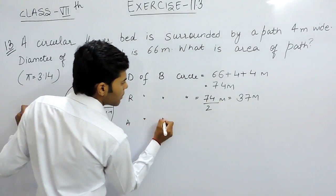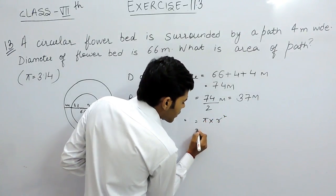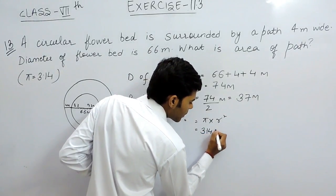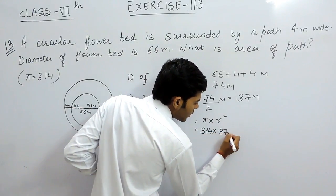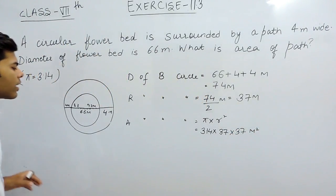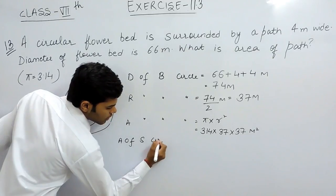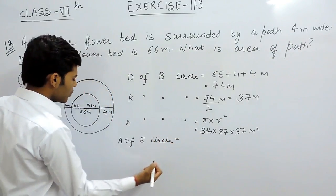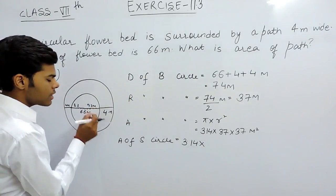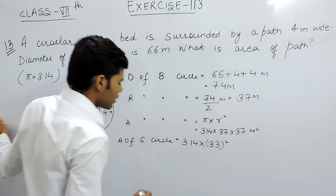Now we will find the area of the bigger circle, which is π multiplied by r squared, equal to 3.14 multiplied by 37 times 37 meters squared. After that, the area of the smaller circle will be equal to π multiplied by 33 squared.